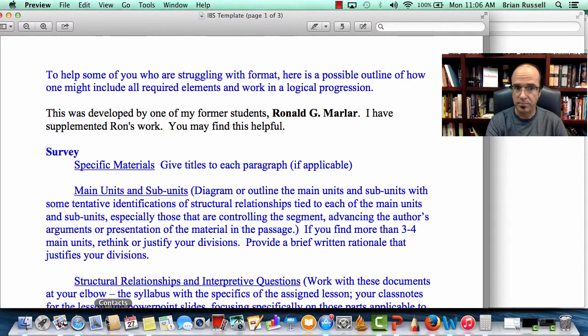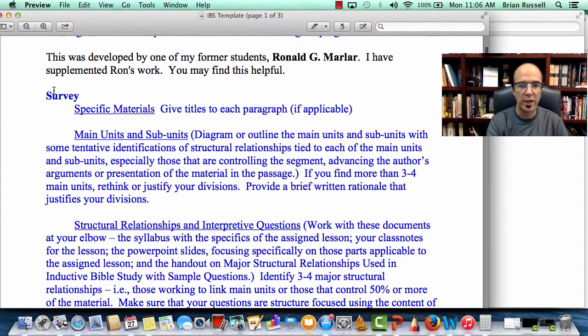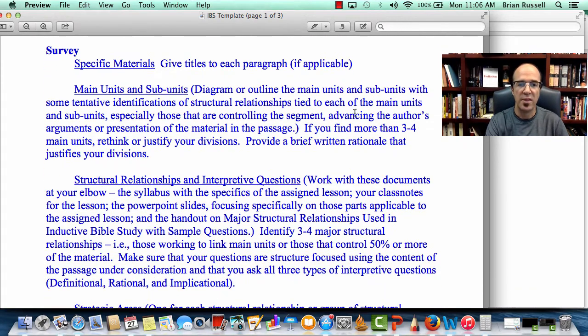So what's in a survey? When we start working on a survey, what are we looking at? We want to work through, first, give titles to paragraphs if that's applicable. If it's a larger unit, if you're doing a whole book, you would obviously give titles to the entire chapter. And then what you're looking for are main units and subunits. Try a diagram or an outline that clearly shows both the main units and the subunits, and try to focus on a two- or three-sentence rationale that justifies why you put your main units where you did. Rule of thumb: if you have more than three to four main units, rethink or justify your divisions again.